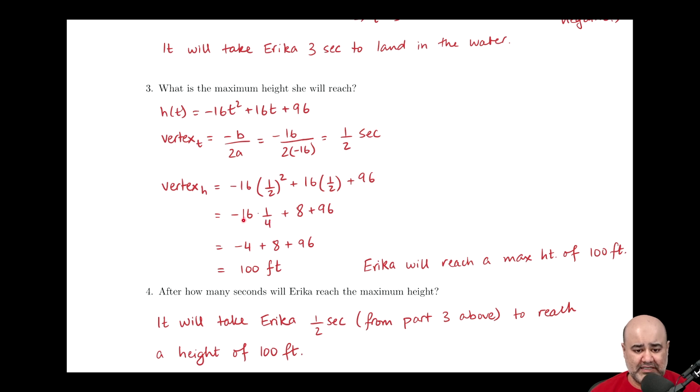One-half squared will be one-fourth. One-half times 16 will just be 8. Then 96 comes along for the ride, and the negative 16 comes along for the ride. Negative 16 divided by 4 will give us a negative 4, plus the 8, plus the 96. And if we clean up this arithmetic mess, we get 100. Now, this is a height. So the units of height will be 100 feet. A sentence to explain our answer. Erica will reach a maximum height of 100 feet.